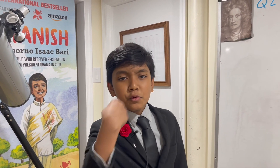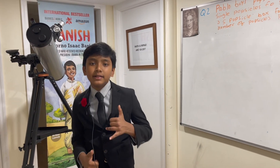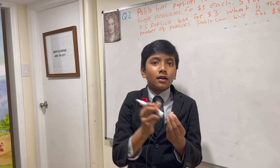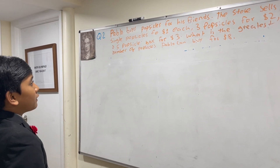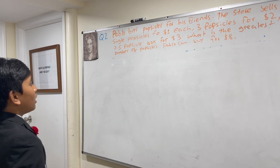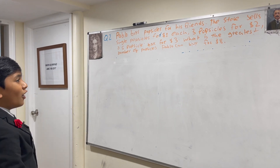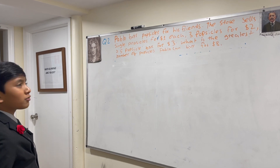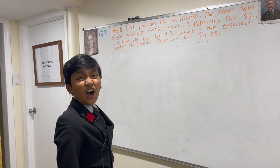We're on problem 1, question 2. Pablo buys popsicles for his friends. The store sells single popsicles for one dollar each, three-popsicle packs for two dollars each, and five-popsicle boxes for three dollars each. What is the greatest number of popsicles Pablo can buy for eight dollars?